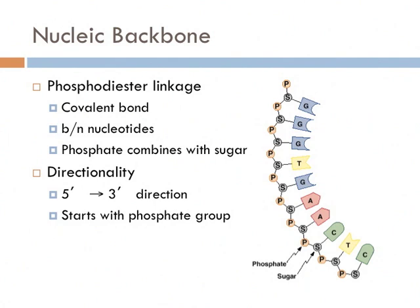This backbone is the same for both DNA and RNA. If you look at the ends of this molecule, you notice that there is a phosphate on one end and a sugar on the other end. This gives nucleic acids like DNA and RNA a direction. Starting with the phosphate group and moving towards the sugar is known as having a 5' to 3' directionality.